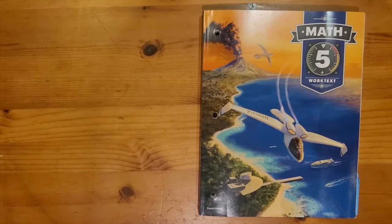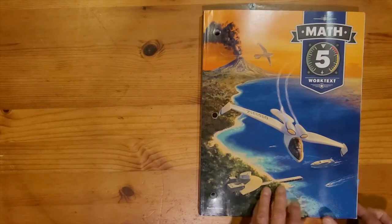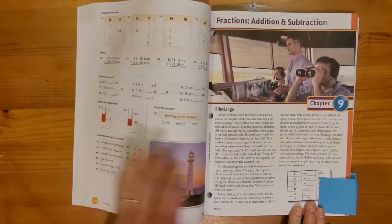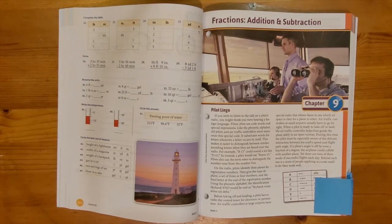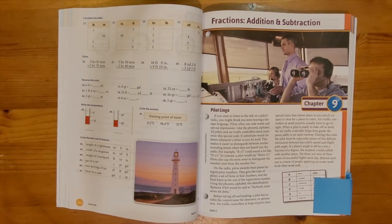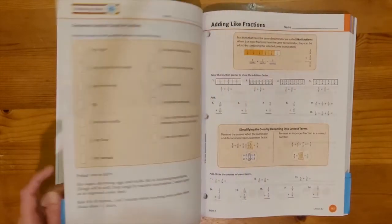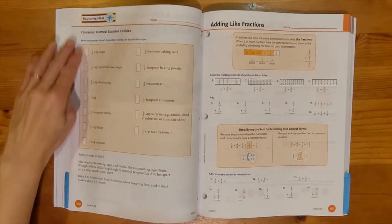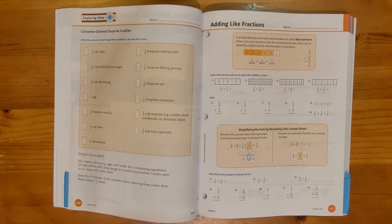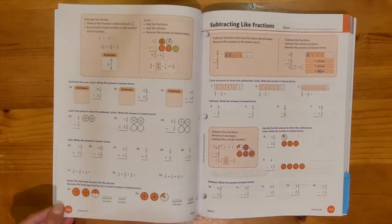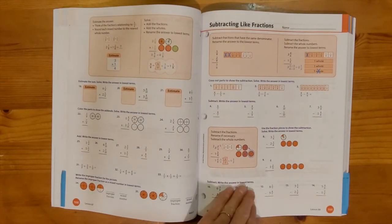This is the Math 5 worktext. This is where my child would go each day to do their assignment. I'm going to flip it open to chapter 9. You might recognize this page as one we saw in the teacher edition. So this is that aviation theme page to introduce our topic, which in this case was adding and subtracting fractions. Right behind that, I have my exploring ideas worksheet. Remember that it lists the lesson number at the bottom corner of the page, and it actually does that on every single lesson. So I always know which lesson these worksheets should be going with.